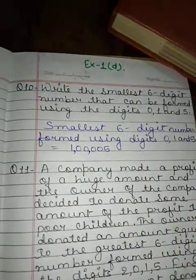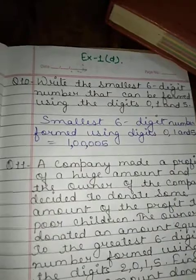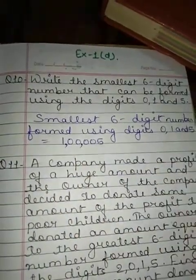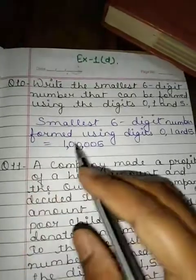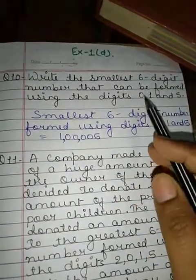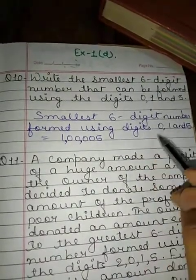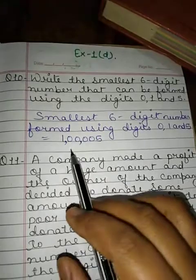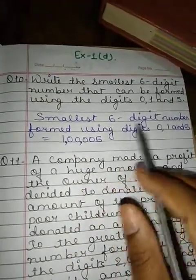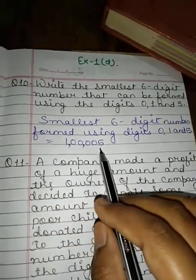Now children, see question number 10: Write the smallest 6-digit number that can be formed using the digits 0, 1, and 5. How we will solve? As you can see, there are only 3 digits given. So we will use 0 four times to make these 3 digits into a 6-digit number. So 1,05,000 will be the answer.